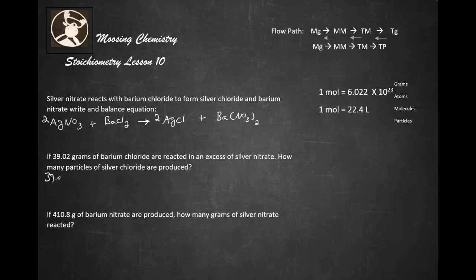All right, we go 39.02 grams of barium chloride times one mole of barium chloride divided by its molar mass. Now, the molar mass of barium chloride is 208.23. And we do that by figuring out the molar mass of barium chloride. So that cancels those units out.